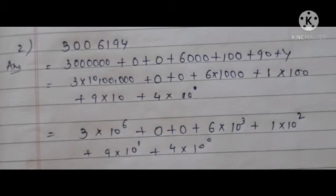Then again in next step we can write 30 lakh is 3 multiply 10 lakh, plus 0, plus 0, 6000 is 6 multiply 1000, 100 is 1 multiply 100, 90 is 9 multiply 10, and 4 multiply 1. So 3 multiply 10 raised to 6, plus 0, plus 0, 6 multiply 10 raised to 3, plus 1 multiply 10 raised to 2.